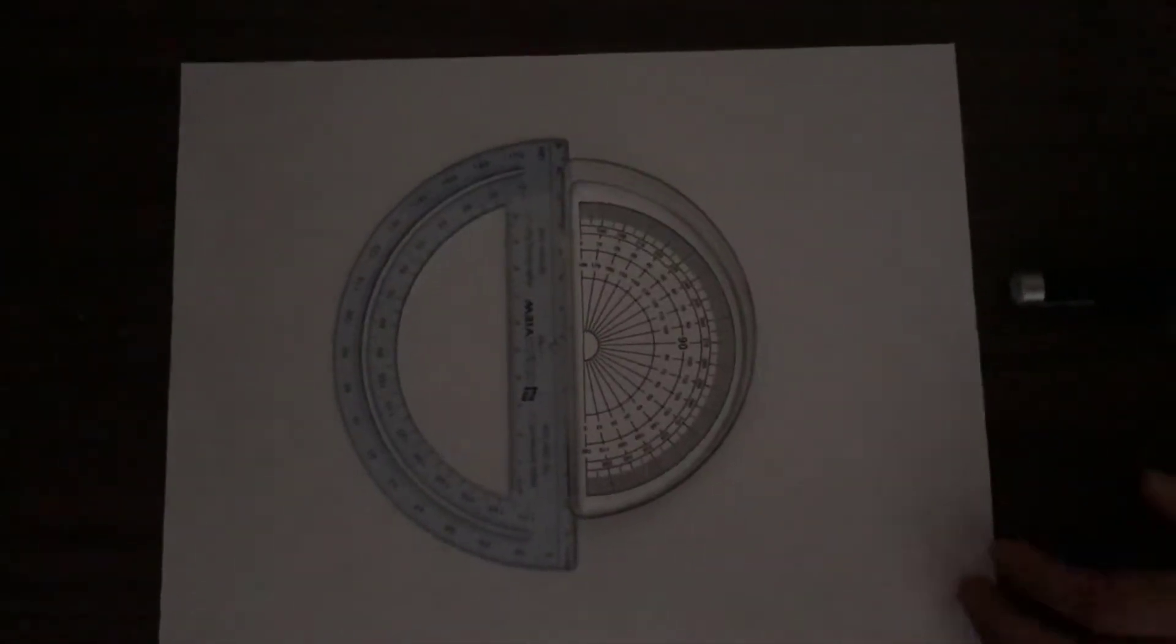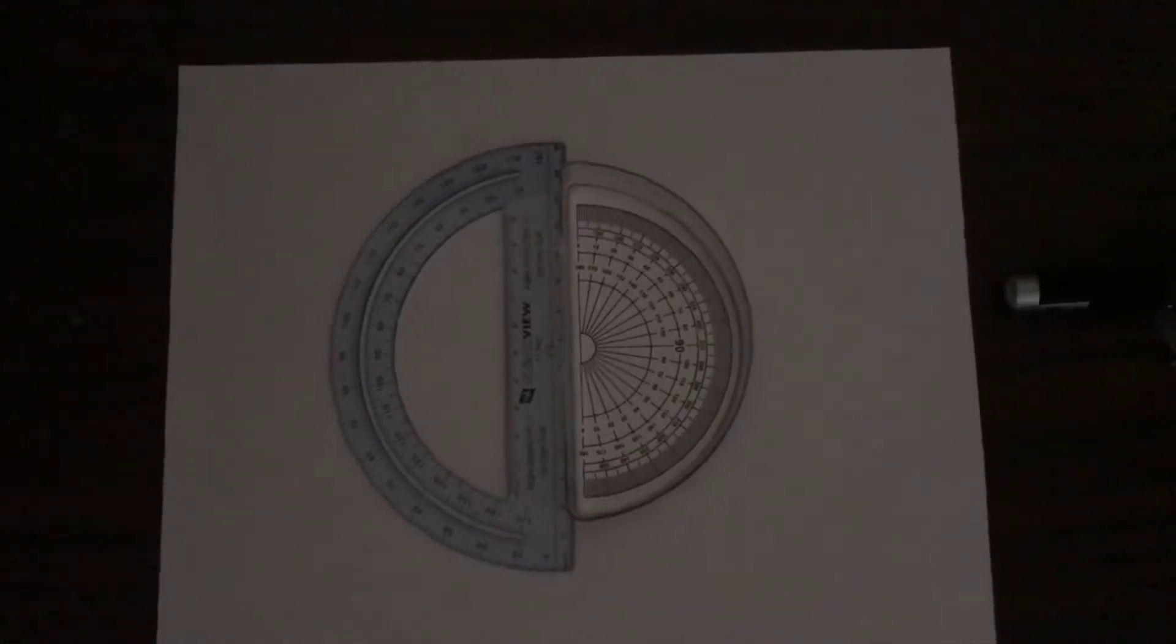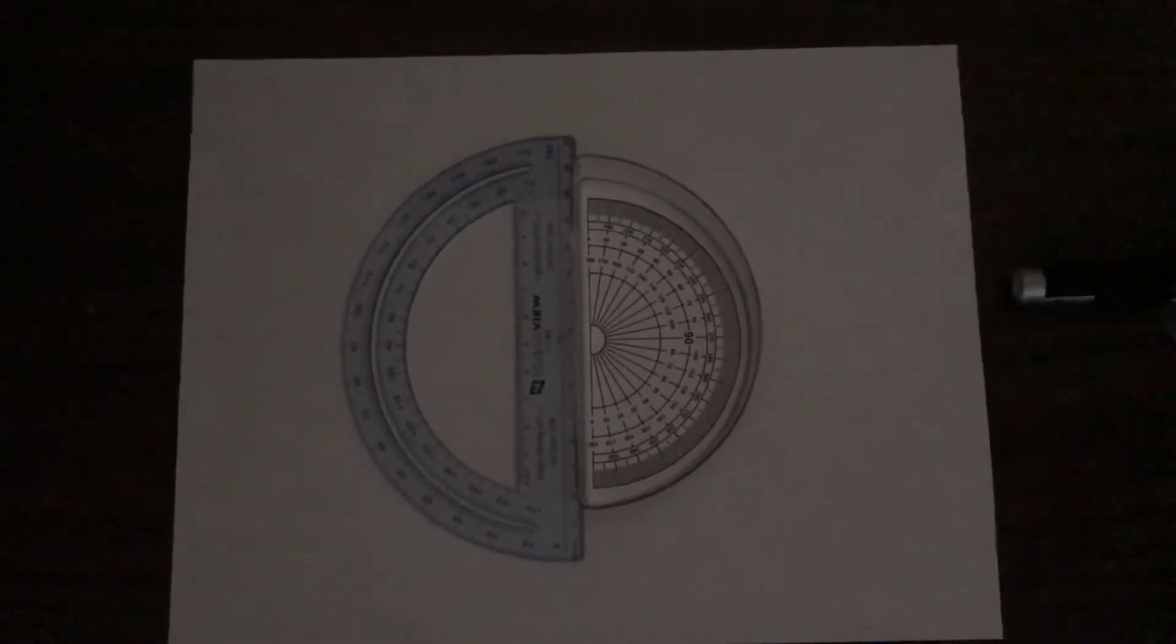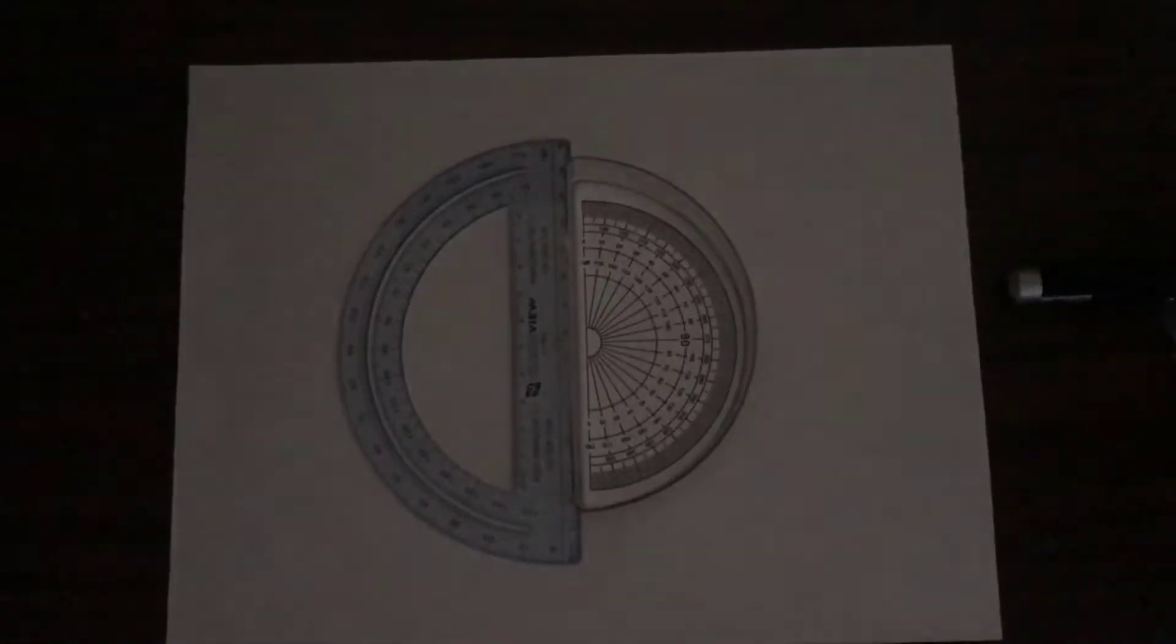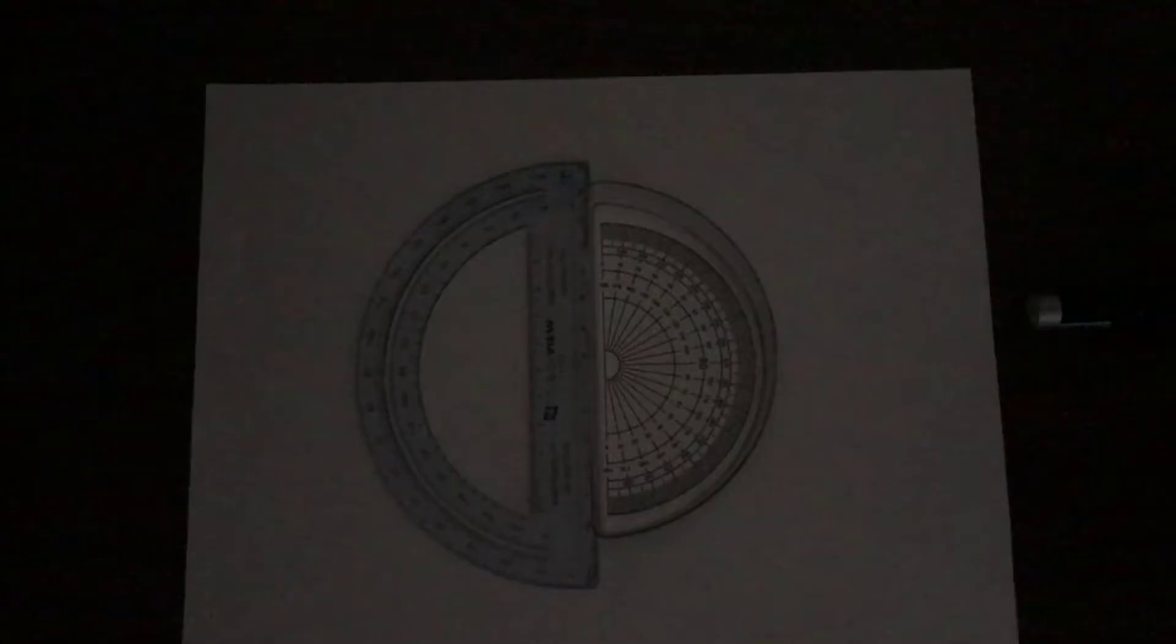We also want to make sure that we are in a dark room. Try and do this in as dark a room as possible while still being able to see the angles on your protractor. We're going to go ahead and make this room a little bit darker.